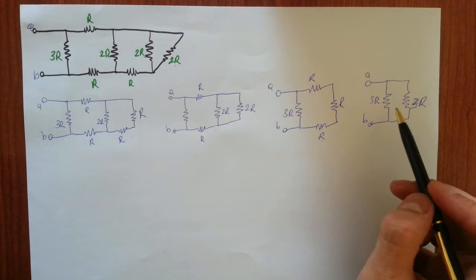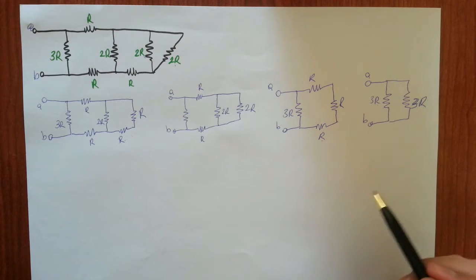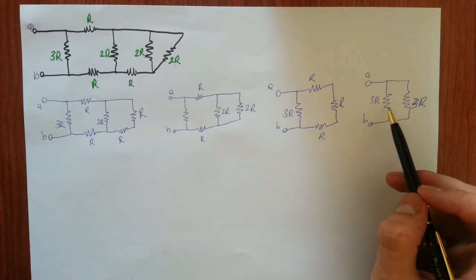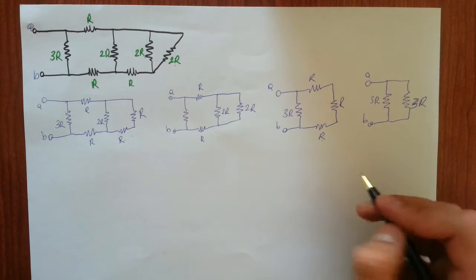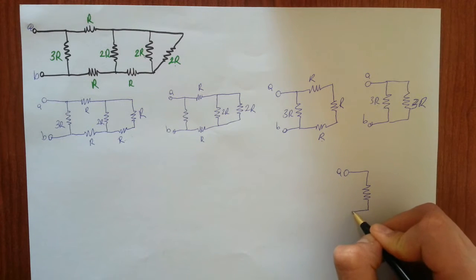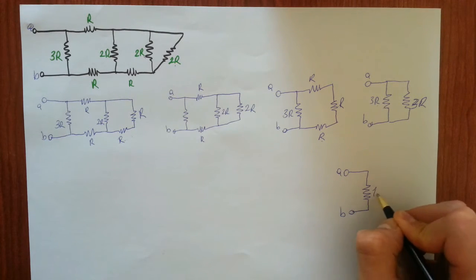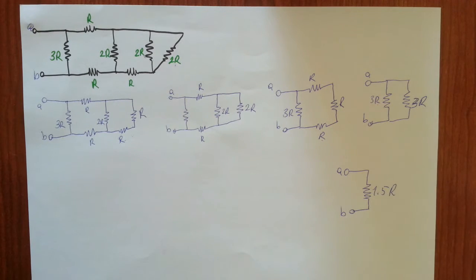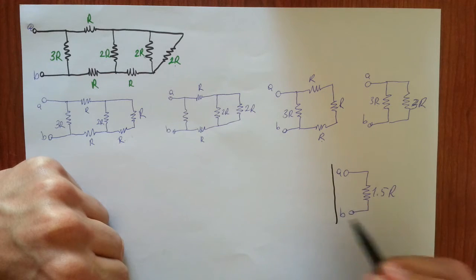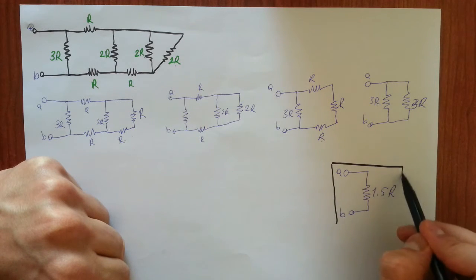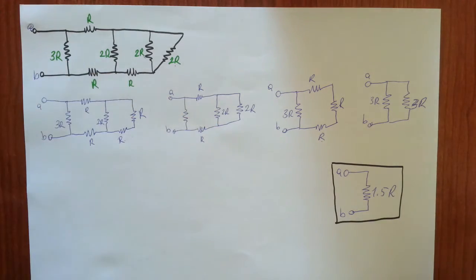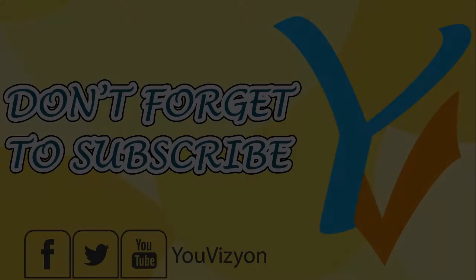The last step is that these two 3R resistors are in parallel with each other, so they make a single 1.5R resistor. Terminal A, equivalent 1.5R resistor, terminal B. That's the equivalent resistance seen by terminals A and B. That's the process I follow. Thanks for watching.